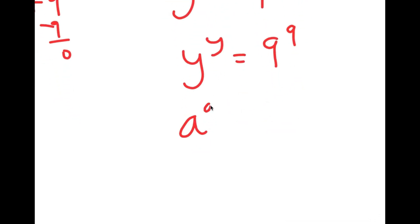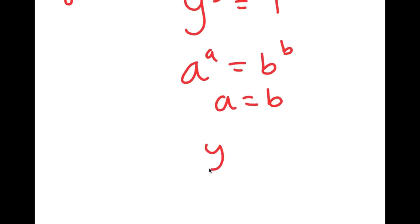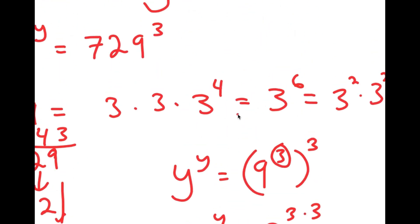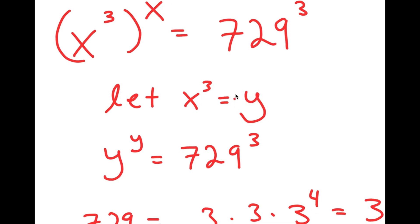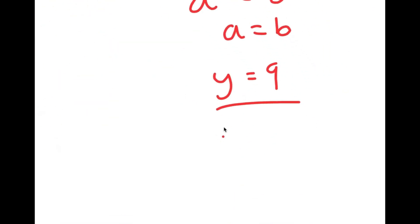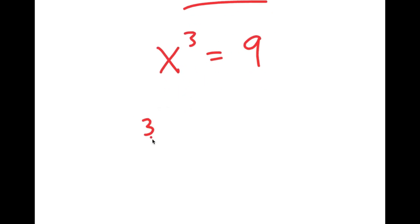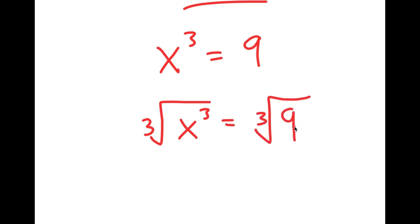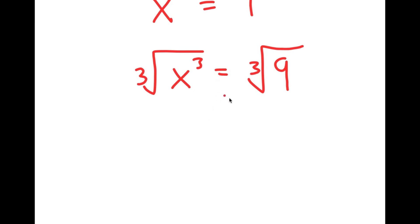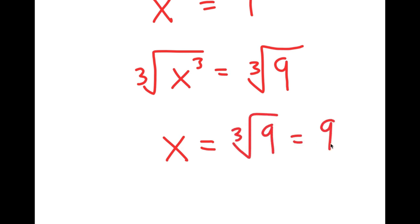Now I can use the property: if a to the power of a equals b to the power of b, then a equals b. So in this case, y is equal to 9. Recalling that I let x to the power of 3 equal y, I get x to the power of 3 is equal to 9. Taking the cube root on both sides, the cube root of x to the power of 3 is simply x, so x is equal to the cube root of 9, which is the same as 9 to the power of one third.